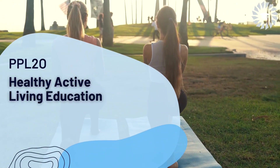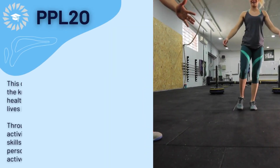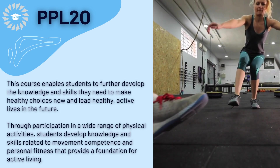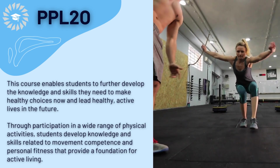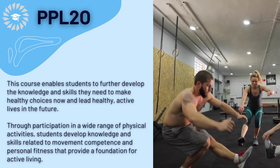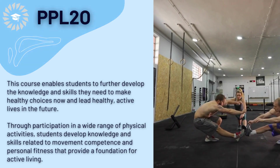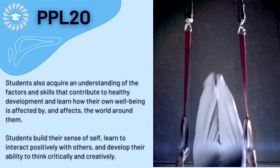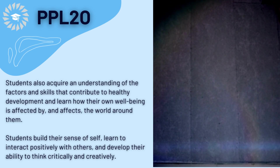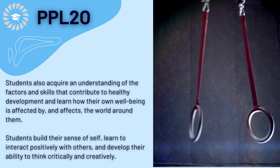Welcome to PPL 2-0, Healthy Active Living Education, Grade 10, Course Overview. This course enables students to further develop the knowledge and skills they need to make healthy choices now and lead healthy, active lives in the future. Through participation in a wide range of physical activities, students develop knowledge and skills related to movement competence and personal fitness. Students also acquire an understanding of the factors and skills that contribute to healthy development, learning how their well-being is affected by, and affects, the world around them. Students build their sense of self, learn to interact positively with others, and develop their ability to think critically and creatively.